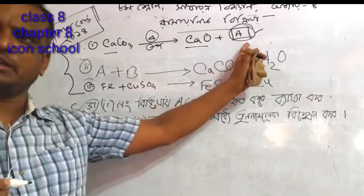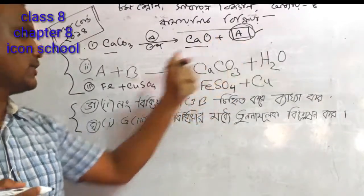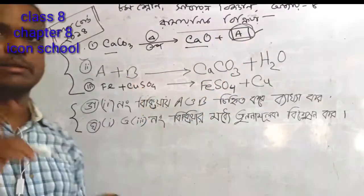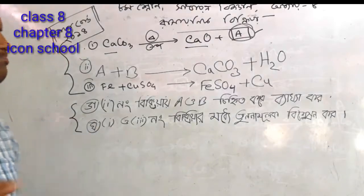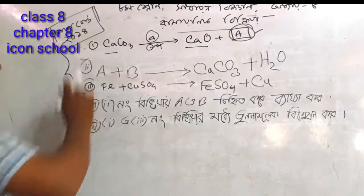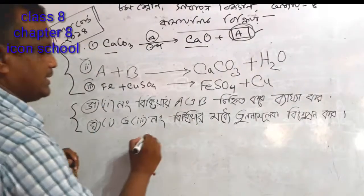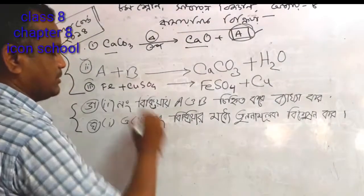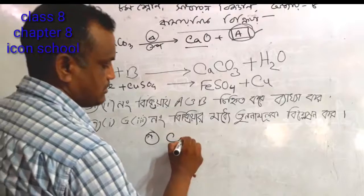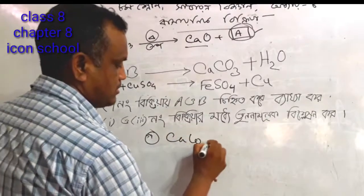Where did we get the A number? The B number is in the B number. We will get the A number. Where is calcium carbonate?